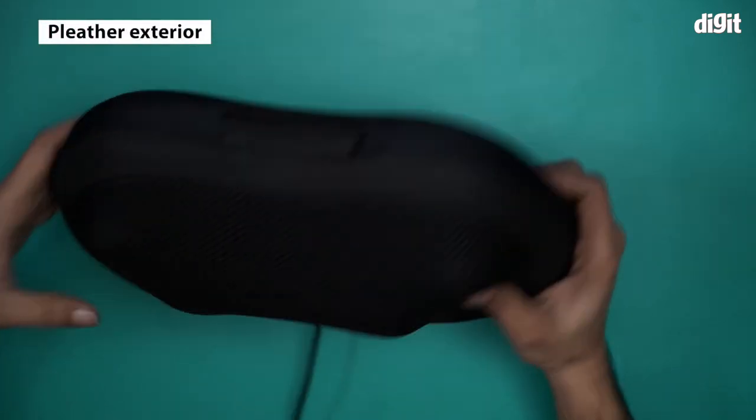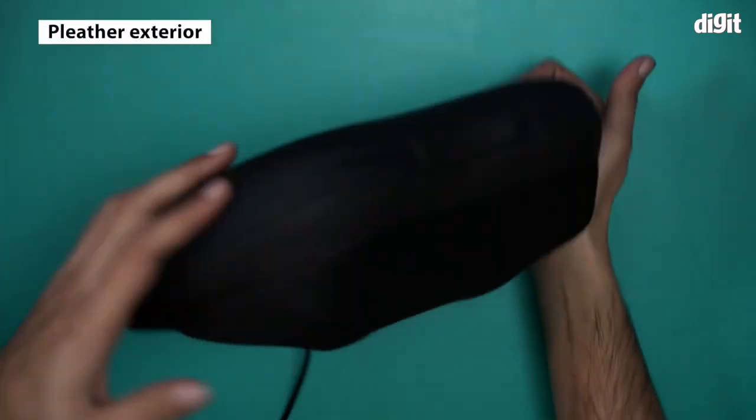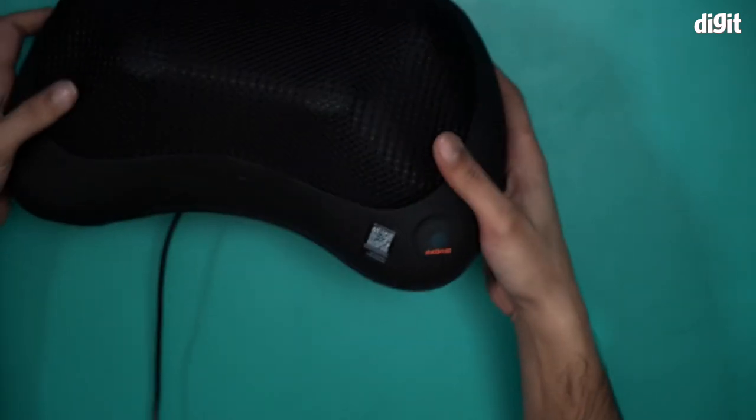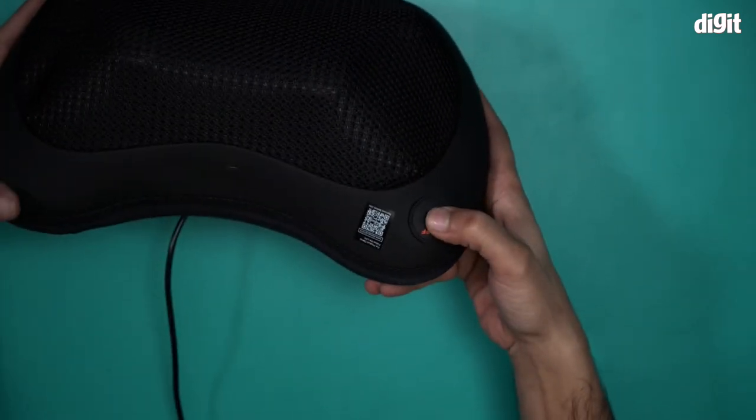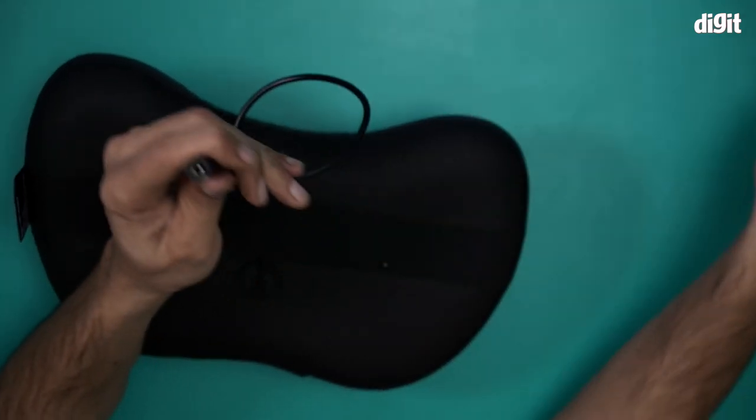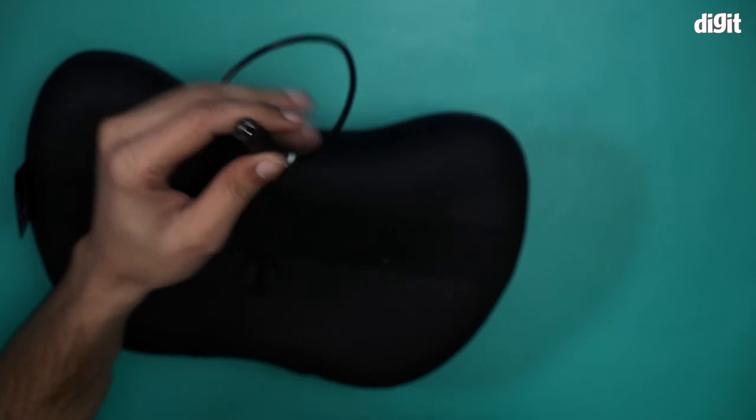This has a pleather texture on it. This has a zip as well. This looks more like a bag. This is the on-off button right over here. And this is your charging cable. So the charging port is at the end of this particular cable.